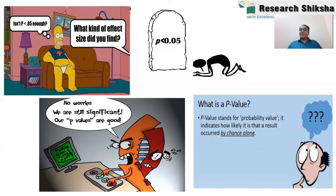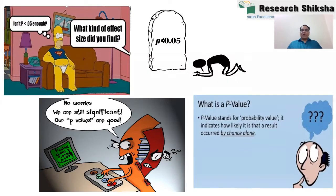Meta-analysis will give you the right answer — on average, how long a person can survive. In meta-analysis we are not focusing on p-value because all studies may be significant, but p-value is not giving the answer to my research question. For example, if I want to know the impact of debt-equity ratio on market capitalization of a company, or the impact of attitude on purchase intention, p-value alone cannot provide that answer.